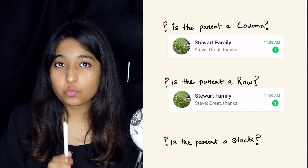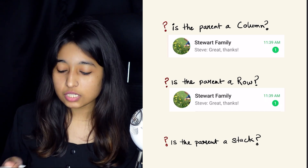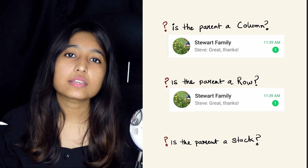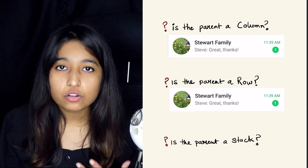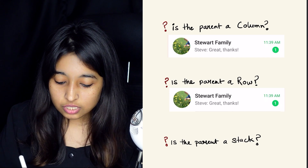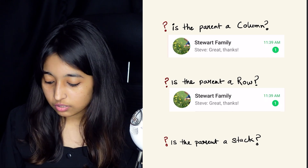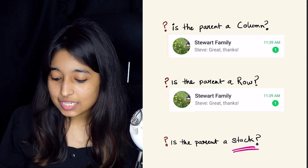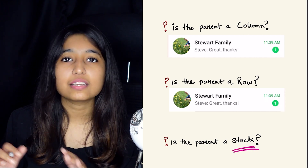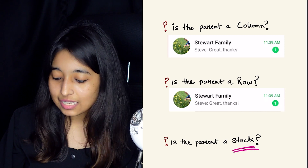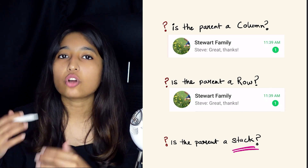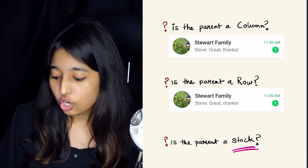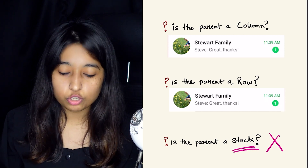So the first question that we need to ask when we are breaking down this preview widget is: is the parent going to be a column, or is the parent going to be a stack, or is the parent going to be a row? Let's figure out — is it going to be a stack? I don't see that this could be a stack here. It's like an empty background, and I feel that there's nothing going on top of or behind the elements. So no, it's not going to be a stack.